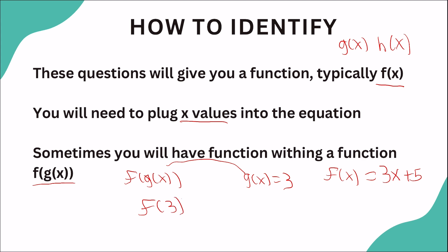And now we can use our f equation that we have over here and plug in this 3. So f of 3 equals 3 times 3, like I said we're plugging in our x values, plus 5, and that's going to equal 14.